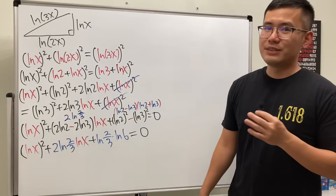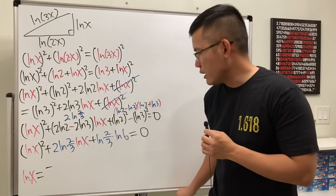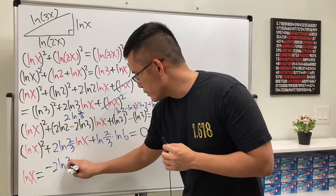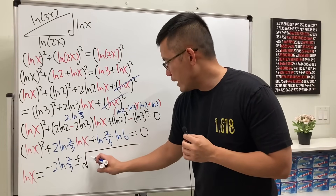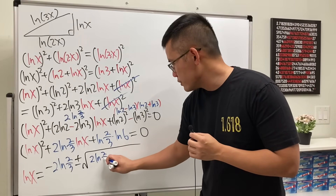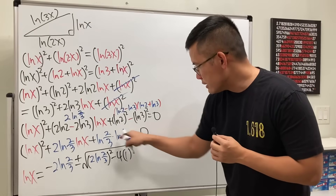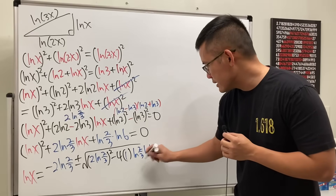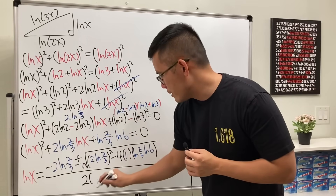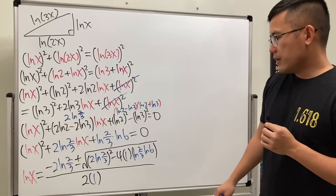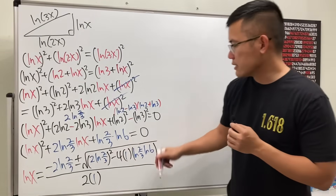Let's apply the quadratic formula. Here a = 1, b = 2·ln(2/3), and c = ln(2/3)·ln(6). So ln(x) equals negative 2·ln(2/3), plus or minus the square root of (2·ln(2/3))² − 4·(1)·ln(2/3)·ln(6), all over 2. Let's simplify the discriminant inside the square root.